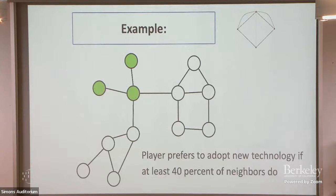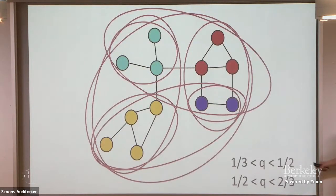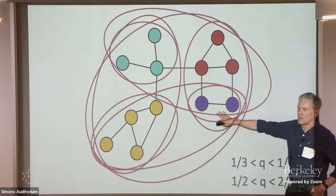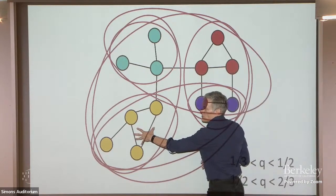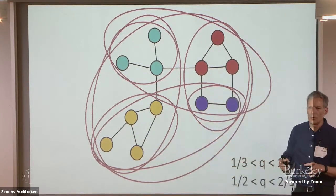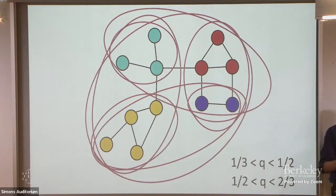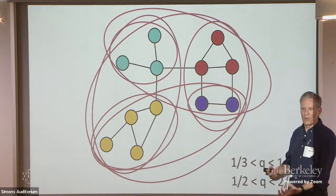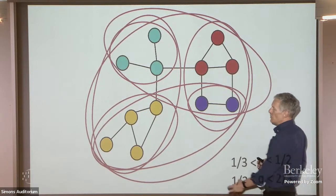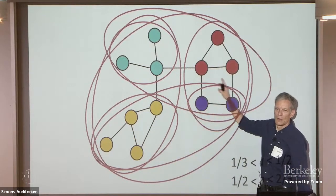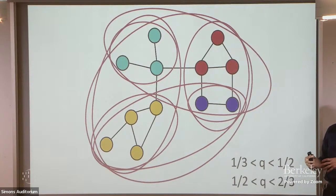There exists a pure strategy equilibrium where both actions are played in a graph if and only if there's a group S that's at least Q-cohesive and its complement is at least (1-Q)-cohesive. This tells us something about how to cut up a graph: whether a graph can sustain multiple equilibria depends on whether you can partition nodes into sets with more connections within than across. This is related to community detection — finding communities of nodes that are more densely connected internally than across.